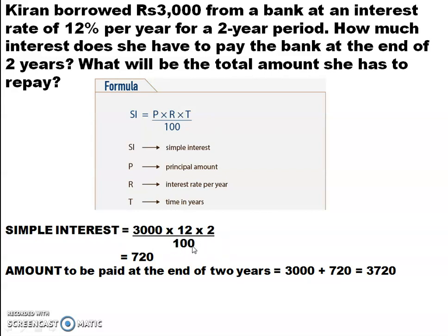Where does this 100 come from? It is coming from the percentage — 12% is written as 12/100. The answer is 720. So what is the amount to be repaid? It is 3,000 + 720 = 3,720.